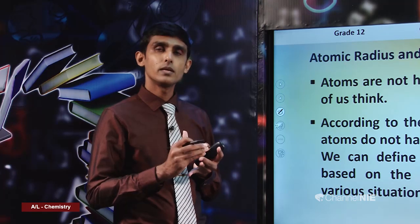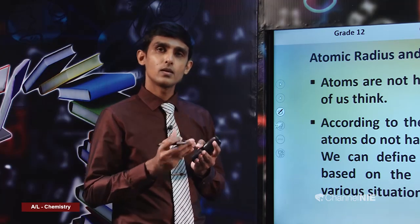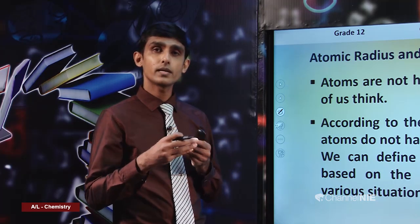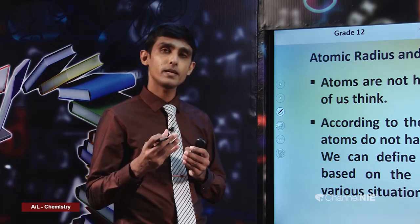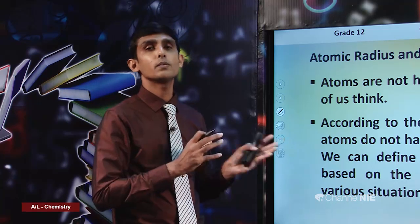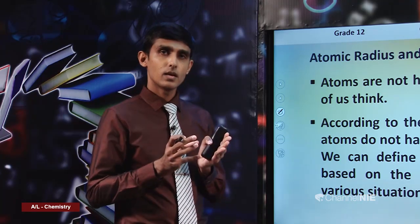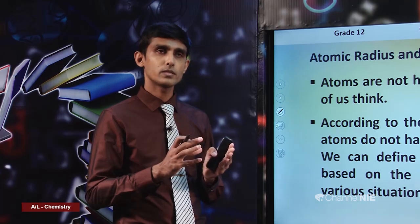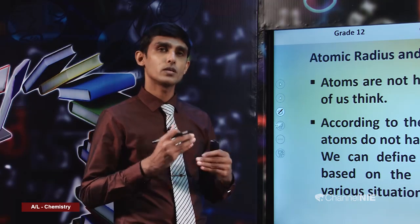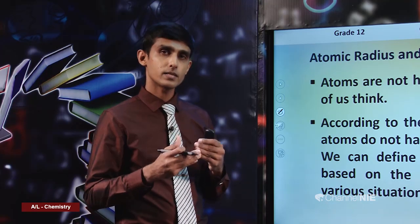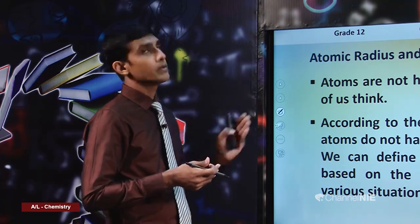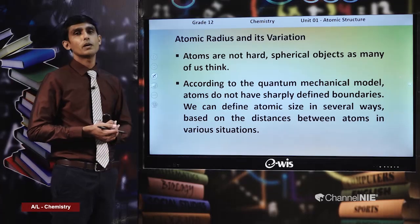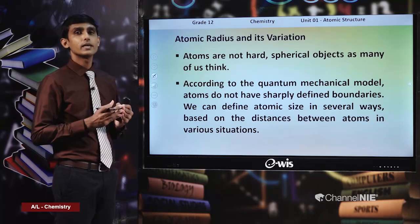When it comes to D block and F block elements, the last electron is not added to the valence shell — it is added to inner shells. Therefore, the shielding due to the increase in electrons when moving across the period is more effective compared to S and P block elements. We do not discuss the variation of effective nuclear charge for D block elements in this topic; that is important for inorganic chemistry discussed under unit 6.